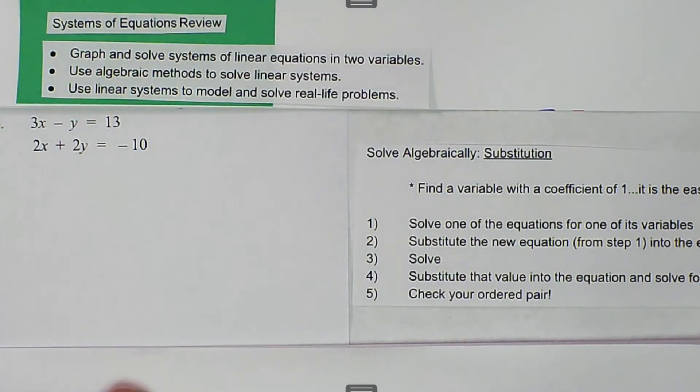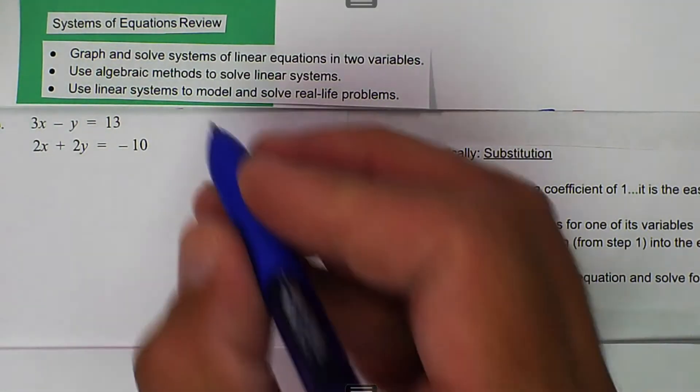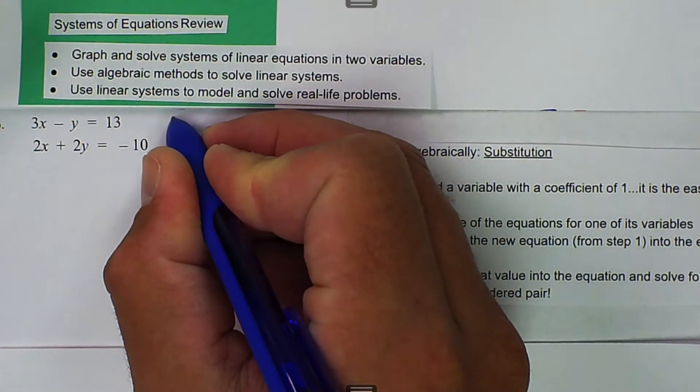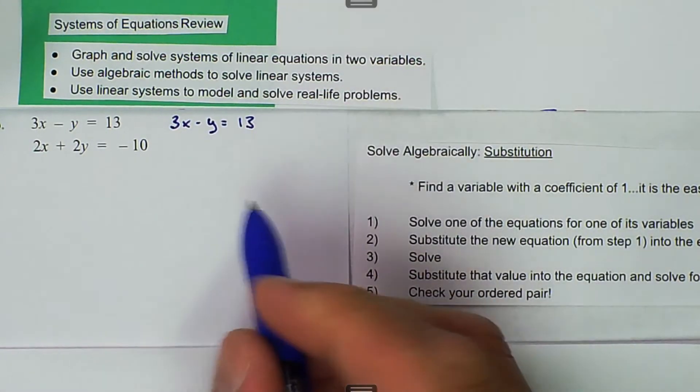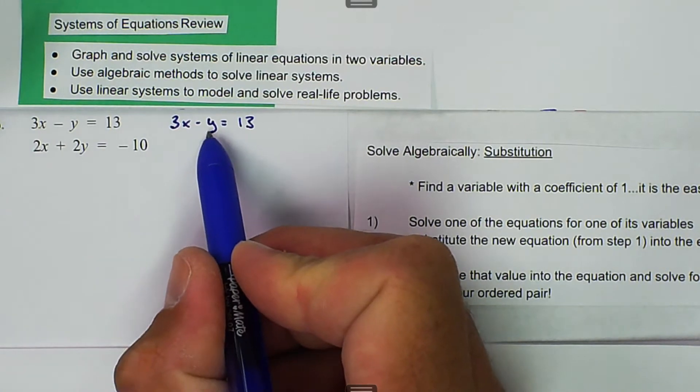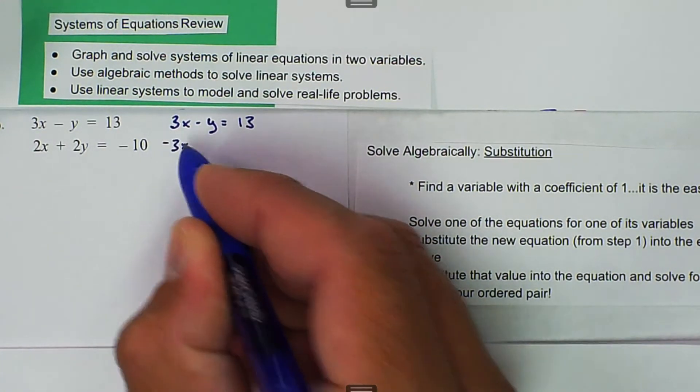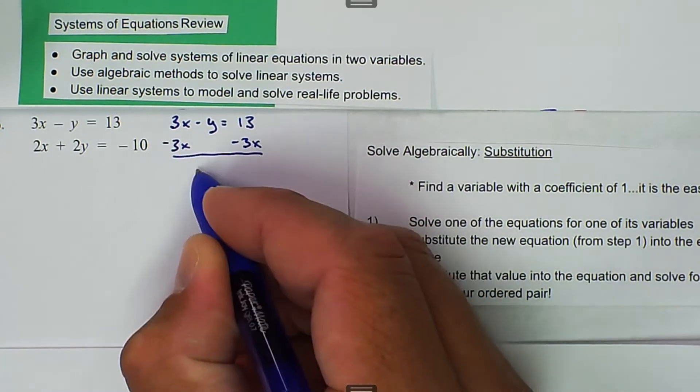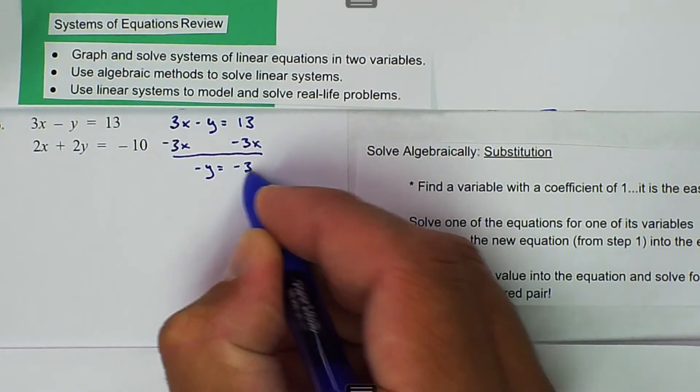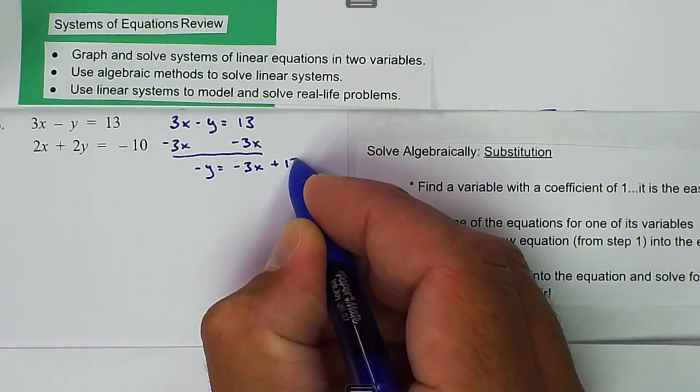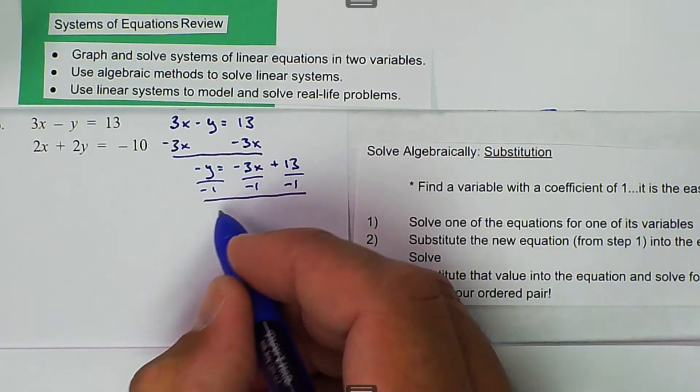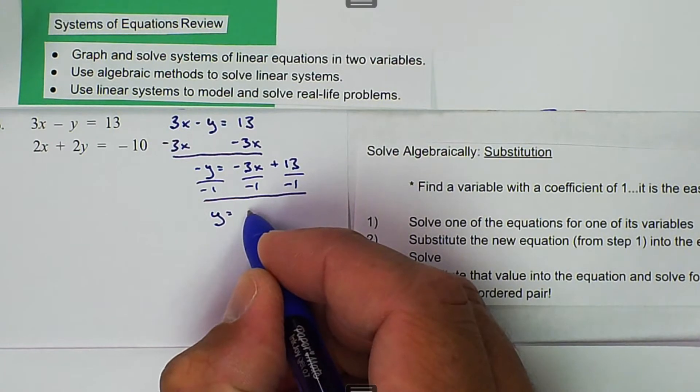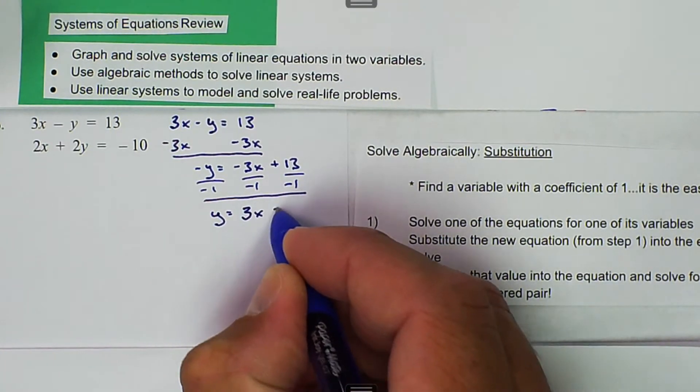What we can do is we have to get one of the variables by itself, though. I'll take this top equation, 3x minus y is equal to 13, and I want to get the y variable by itself. The first thing is we're going to subtract 3x from both sides, and we have negative y is equal to negative 3x plus 13. We can divide everything by negative 1, and then we get y is equal to 3x minus 13.